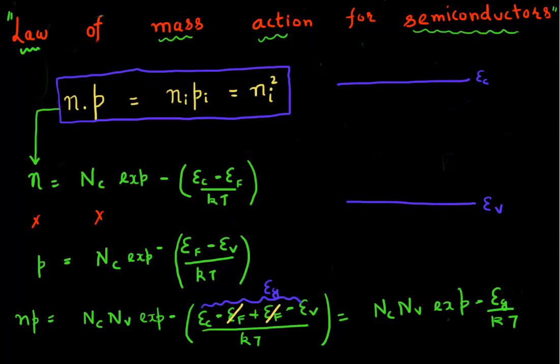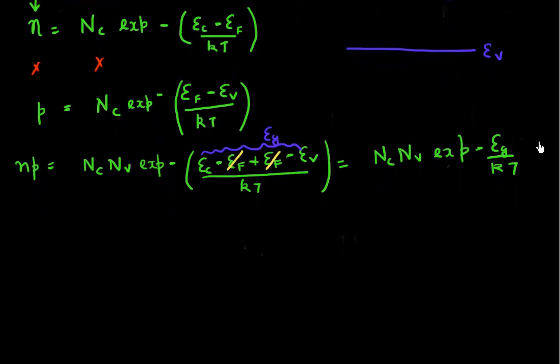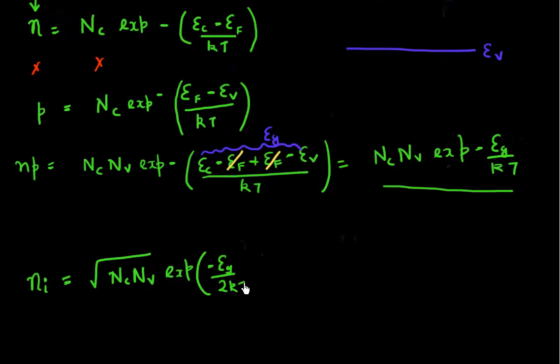In one of the previous videos, we had derived that this is in fact equivalent to n_i squared. We had derived this formula for intrinsic carrier density, which was Nc times Nv times exponential of minus Eg by 2kT. So this term, n times p, is equivalent to n_i squared, which can also be written as n_i times p_i.